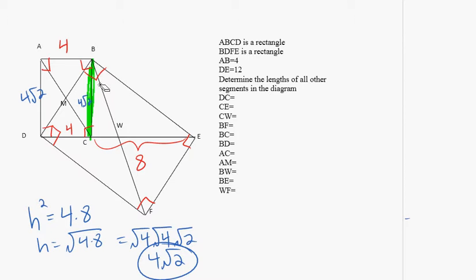Now I can look at this triangle to figure out the diagonal of this smaller rectangle. Instead of using 4 root 2 and 4, I might divide each of these by 4 and get 1 and root 2. This is going to be root 3.